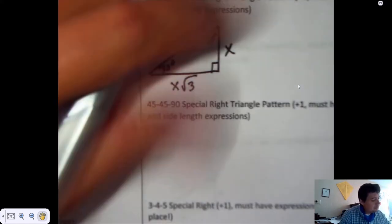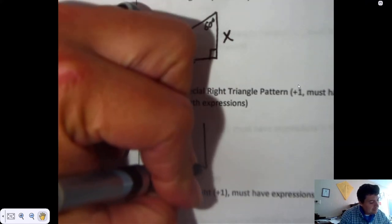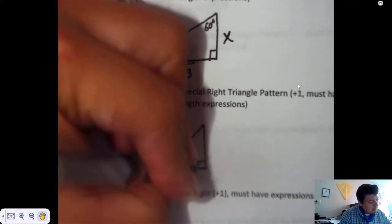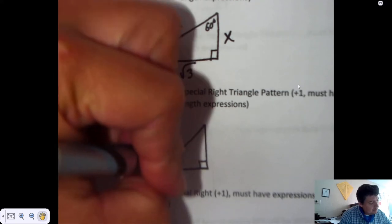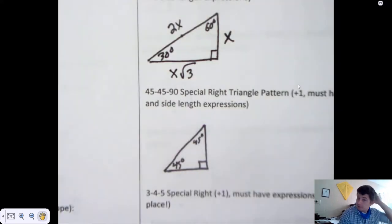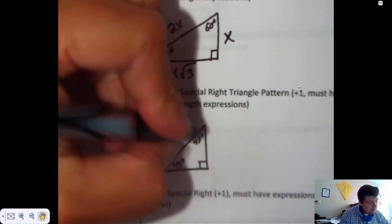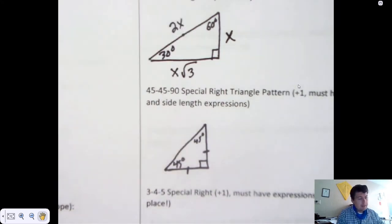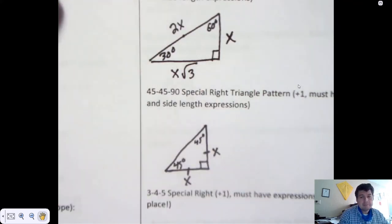You also talked about in that section what we call a 45-45-90, or just a 45-45 special right. It's a right triangle, has a right angle, the two acute angles measure 45 degrees. Also in geometry you learned that congruent angles implies a pair of congruent sides. Since this is a pattern, we just call these things that are the same x.